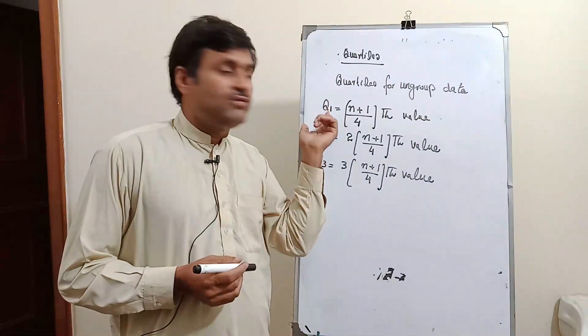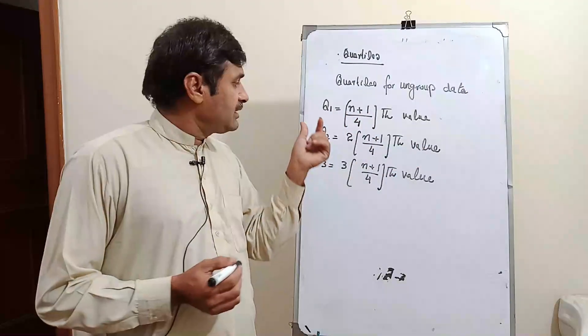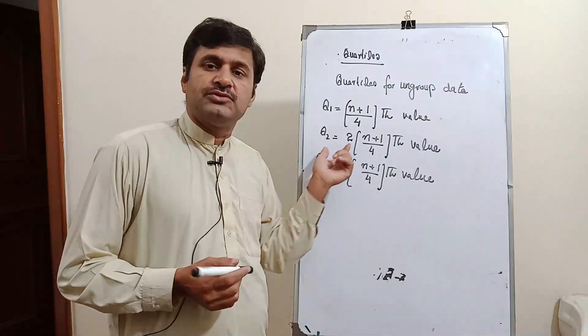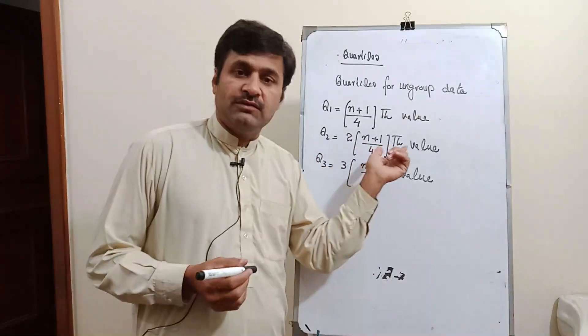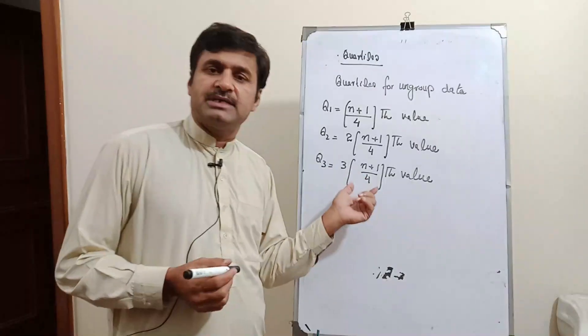Quartiles for ungrouped data: first quartile q1, the formula is (n+1)/4th value. The q2 formula is 2(n+1)/4th value. And the third quartile q3 is equal to 3(n+1)/4th value.